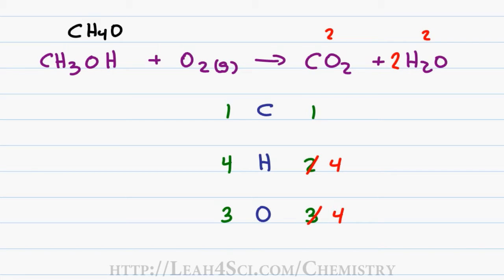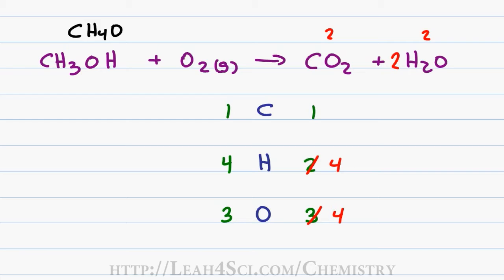I now have carbons and hydrogens balanced but not oxygen. The problem is that oxygen comes as a pair, so if I change the oxygen number I add 2 instead of 1. How can I balance something where I have an even number on one side, an odd number on the other, and all I want to do is add 1? Instead of using fractions, which are more confusing than helpful, the trick is to just double everything. When you double everything, you're doubling that odd factor and you'll be able to balance it a lot easier.